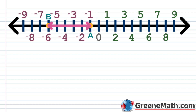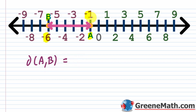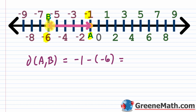Looking at another example: point A is at negative 1, point B is at negative 6. Negative 1 is to the right of negative 6, so it's the larger number. The distance is negative 1 minus a negative 6. Counting from B to A: 1, 2, 3, 4, 5 — so we expect 5. To solve negative 1 minus a negative 6, change minus a negative to plus a positive: negative 1 plus 6, which gives us 5.